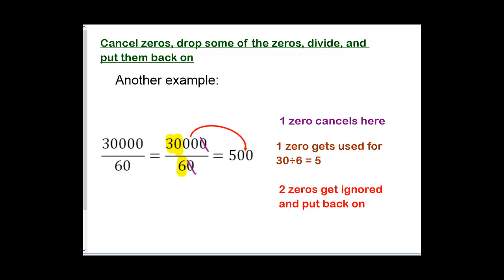In this example we have 30,000 divided by 60. First thing is to cancel a zero. I'm going to drop some zeros, but this time I'm going to keep one of the zeros on 30 because I want to take 30 divided by 6. 30 divided by 6 is 5. Then I take the two zeros that I ignored and put those back on to get an answer of 500.